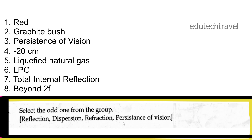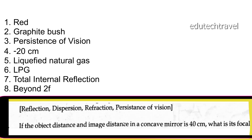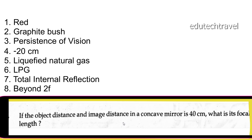If the object distance and image distance is 40 cm, what is the focal length? If the object distance and image distance is 40 cm, then the focal length is 20 cm.